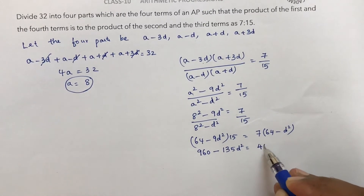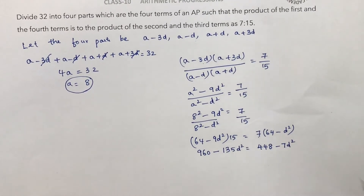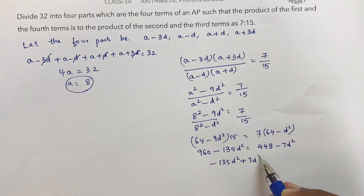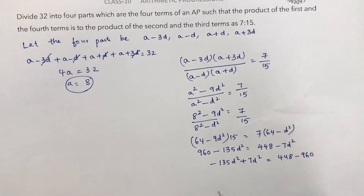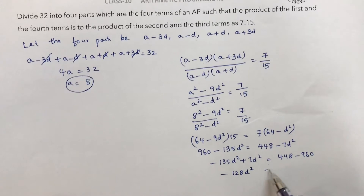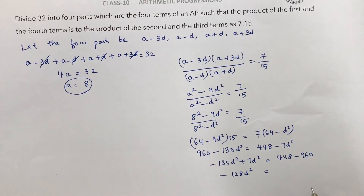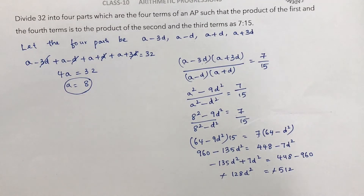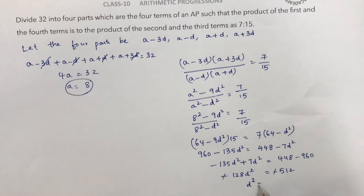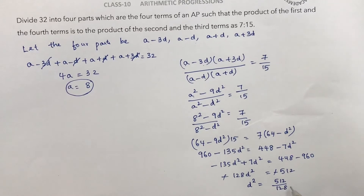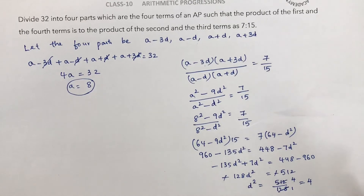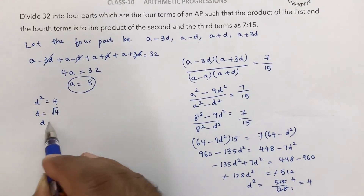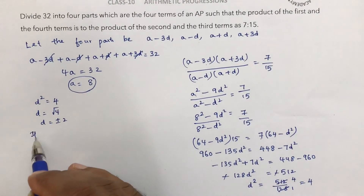Transposing terms: 960 − 448 = 135d² − 7d², giving 512 = 128d². Therefore d² = 512 / 128 = 4, so d = ±2.